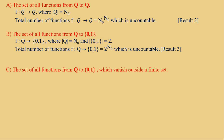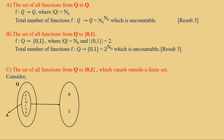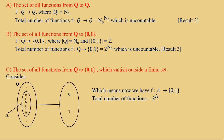Option C: the set of all functions from Q to {0,1} which vanish outside a finite set. Consider a finite set A inside the set of rational numbers. Our function F is from A to {0,1}, because the rest of the function vanishes outside it. Therefore, the total number of functions equals 2 raised to |A|, which is countable since A is finite.